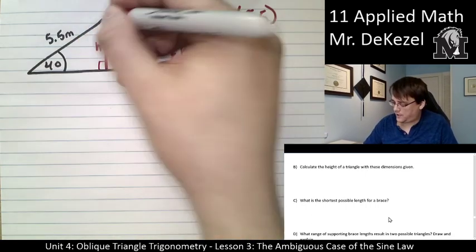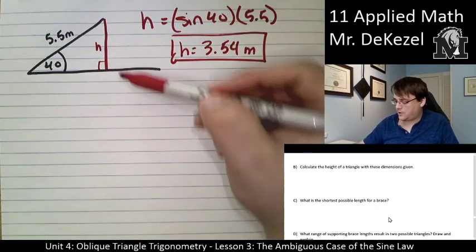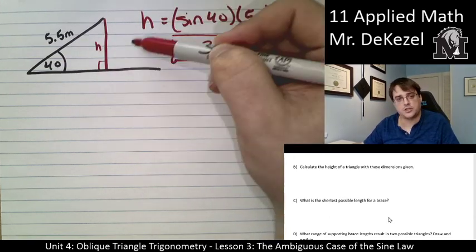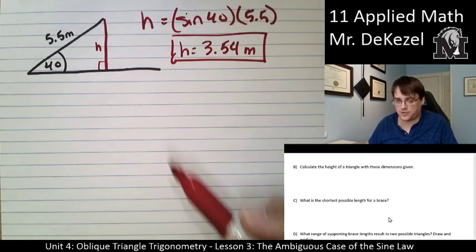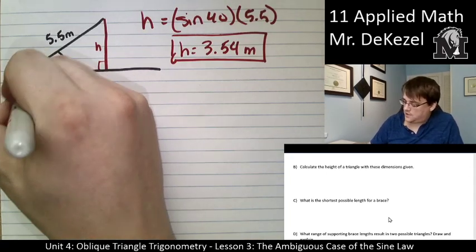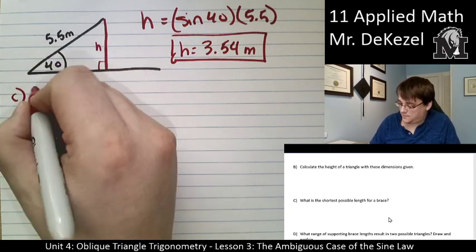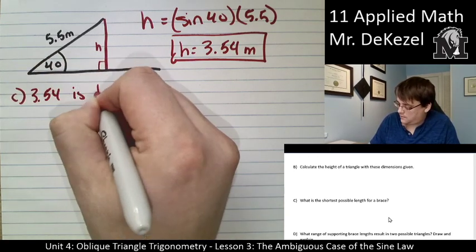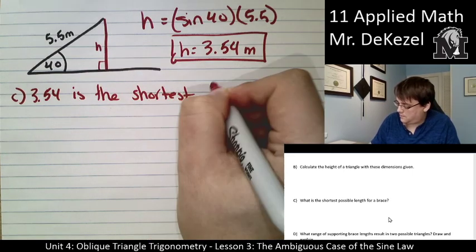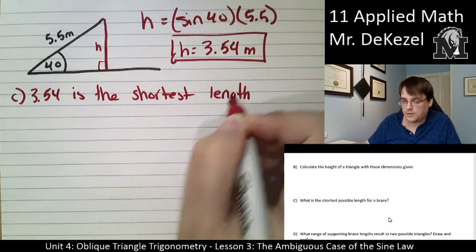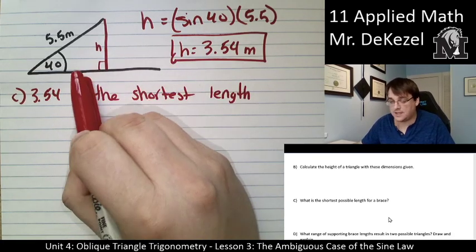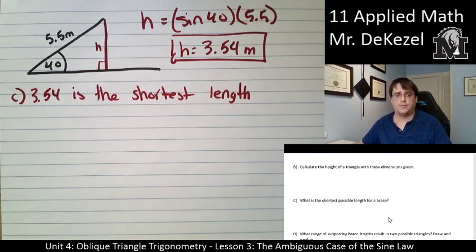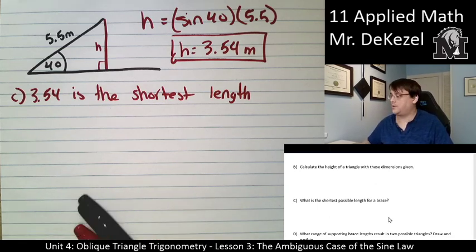Question C: if the brace is any shorter than the height, it will not touch — it will be like a pendulum and swing. As soon as it gets to 3.54 meters, there is one point exactly where the brace will touch. So 3.54 is the shortest possible length; it cannot get any shorter. It could be longer because the brace could land at different points, but it cannot be shorter than 3.54.